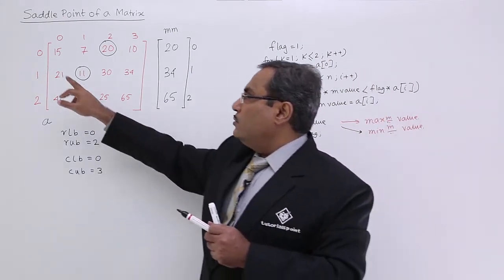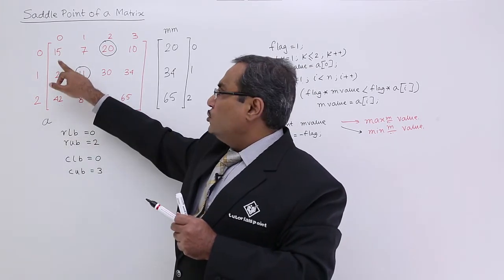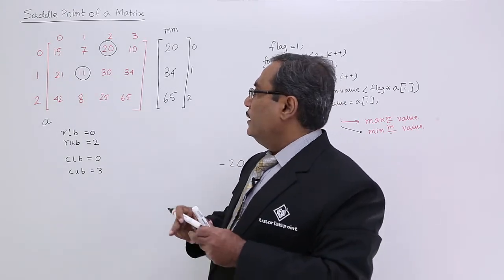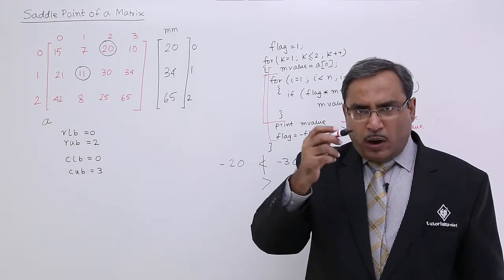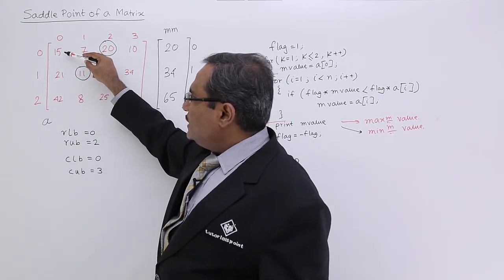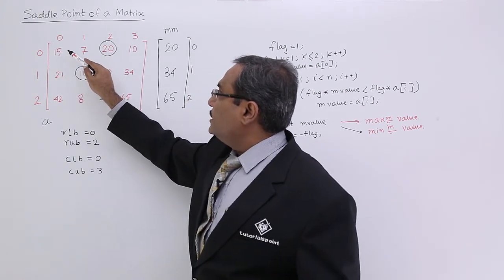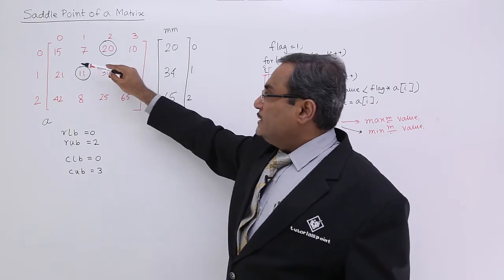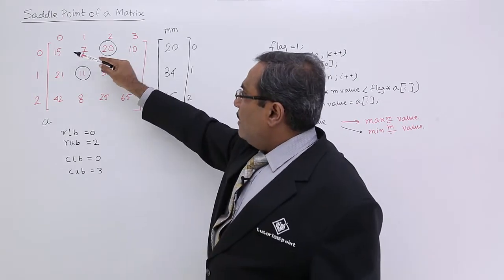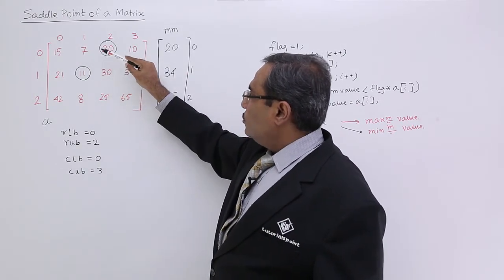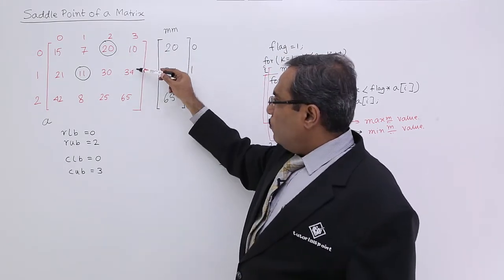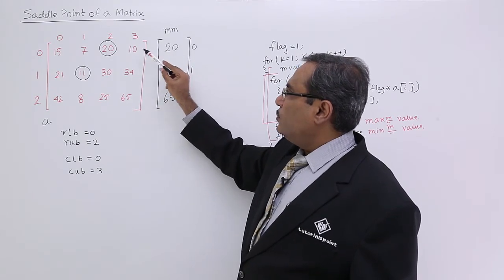After that, we find the minimum of each column individually. For one column I check its minimum value — let it be 15. This value may occur in multiple places, so in one place it may be a saddle point and in another it may not. I scan the column again and check whether the minimum matches the mm array value for that row. For example, for one column the minimum is 20 — and yes, mm contains 20 — so that is a saddle point. For another column, the minimum is 10, but mm has 20, so there is no match and it is not a saddle point.